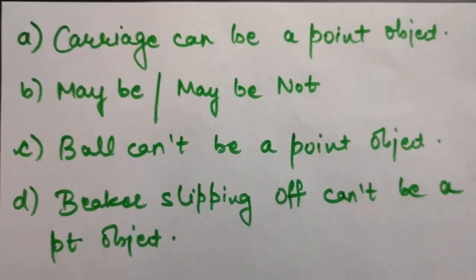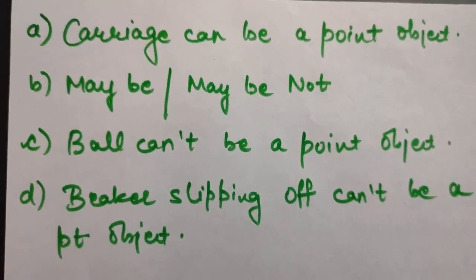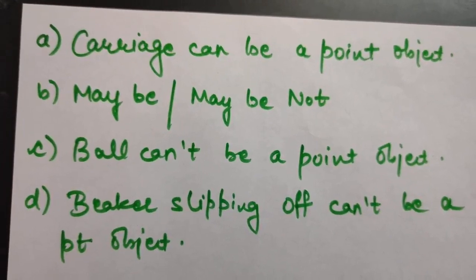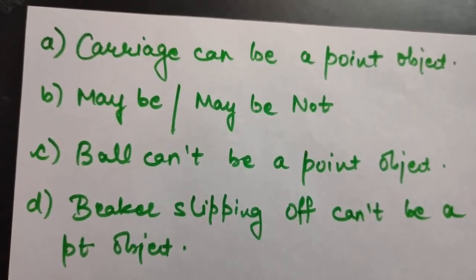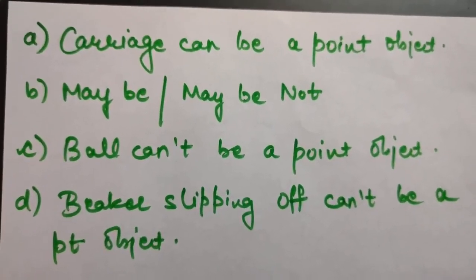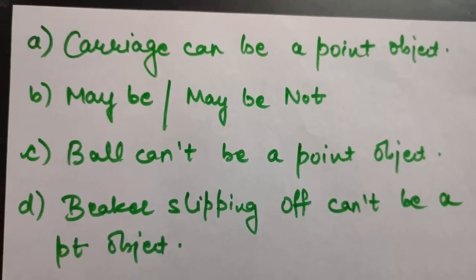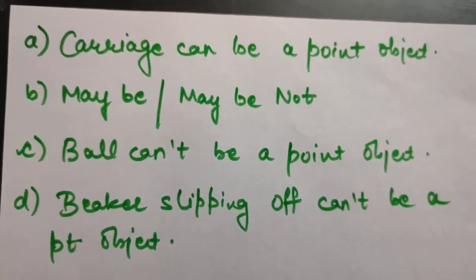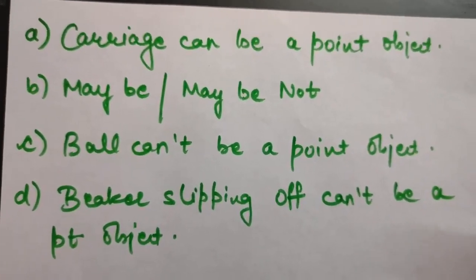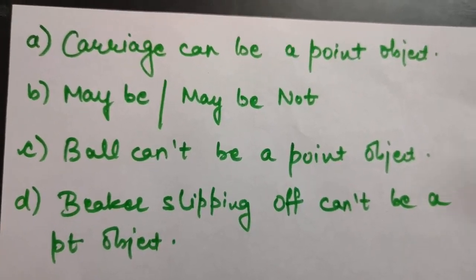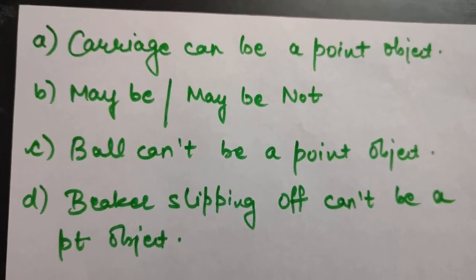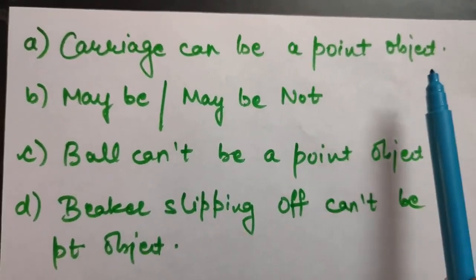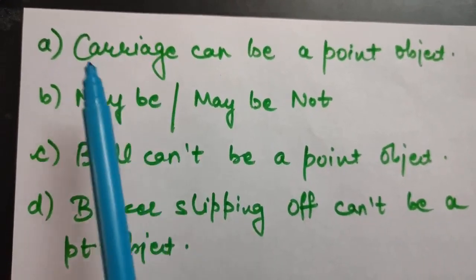Question 1 asks: in which examples can the body be considered approximately a point object? First, a railway carriage moving without jerks between two stations. The carriage can be considered a point object because the distance between two stations is very large compared to the size of the railway carriage.